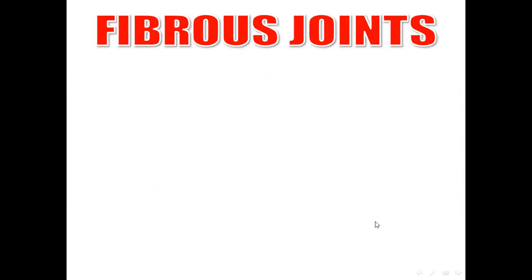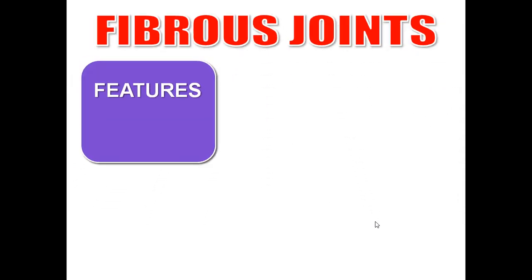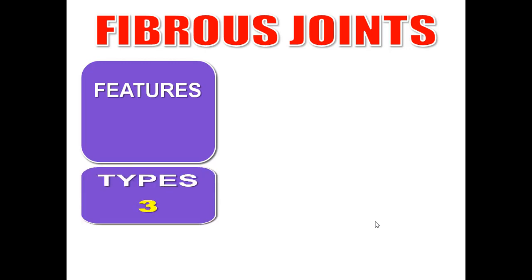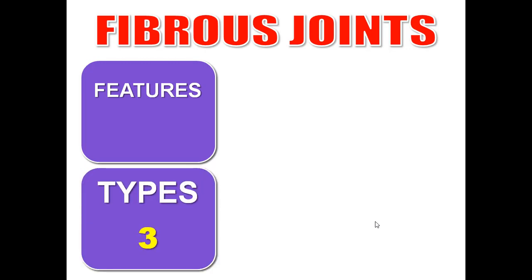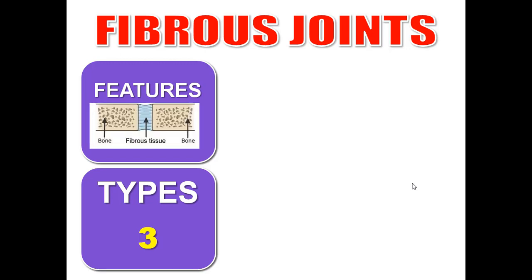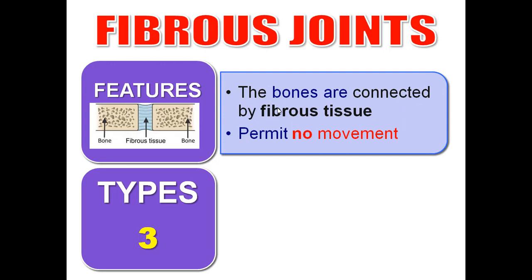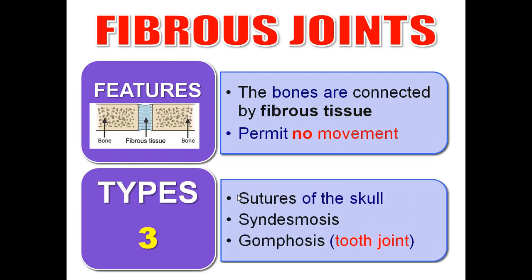Now, fibrous joints: what are the features and what are the types? Remember the two criteria — tissue between the two bones and the movement. The two bones are connected by fibrous tissue and they permit no movement. We have three types of fibrous joints: sutures of the skull, syndesmosis, and gomphosis.